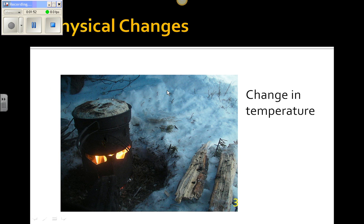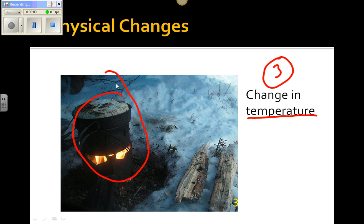The third type of physical change is a change in temperature. For example, this pot here is getting warmed up. Its temperature is changing, but it's still made of the same exact substance that it was made of when it was cold. So a change in temperature is a physical change.